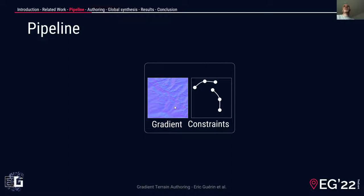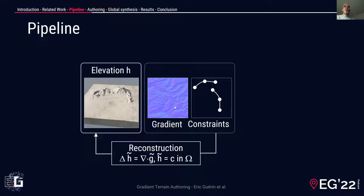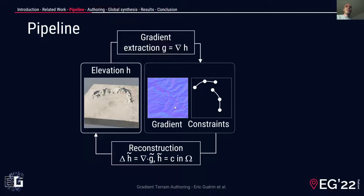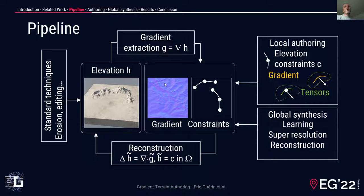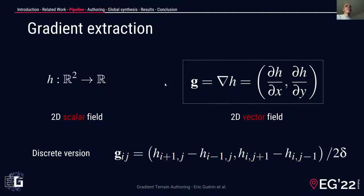The gradient of the elevation is central to our framework. The gradient combined with constraints implicitly defines the model. The elevation can be obtained by reconstruction by solving a Poisson equation. Conversely, the gradient can be computed directly from the elevation. This dual representation allows us to utilize both standard algorithms operating in the elevation and gradient domains. Gradient-based algorithms are attractive in terrain modeling because the gradient represents the slope. We propose both local and global tools for authoring details or generating a gradient map from scratch.